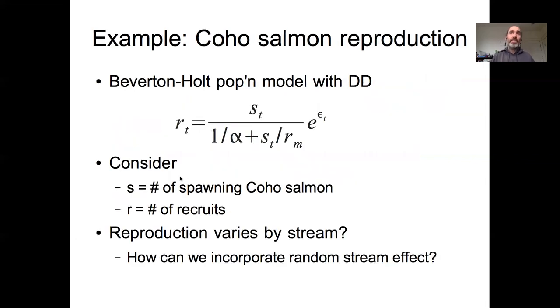For the first example in thinking about how to combine hierarchical models with nonlinear models, we're going to use an example of reproductive effort from Coho salmon in the Pacific Northwest. We're going to do this using a very common population model to represent the density dependence and the relationship between the number of spawning individuals, S, and the number of recruits. ST is the number of spawners at a particular point in time, RT is the number of recruits. The number of recruits depends nonlinearly on these two parameters, alpha and RM. We're also assuming a multiplicative log normal error.